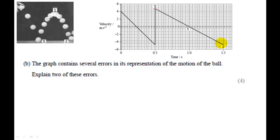So error number one. Let's first just think about how the ball would be moving. It's going to start with zero velocity. It's going to get faster and faster and faster. As we go down, the magnitude of that velocity will be increasing.